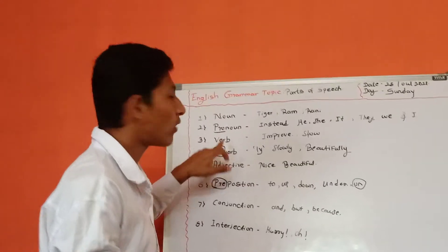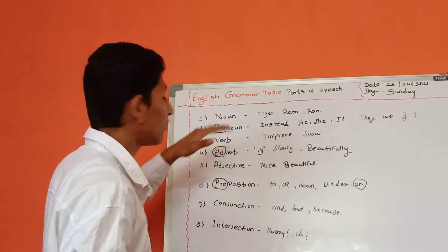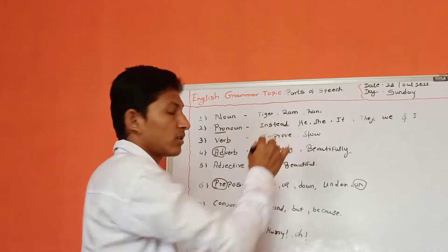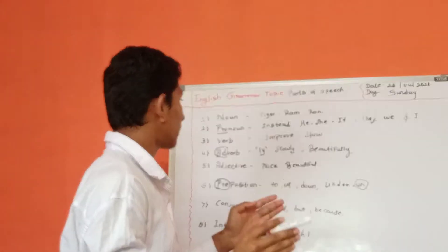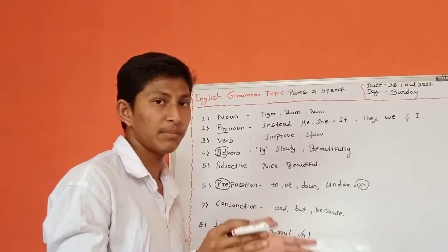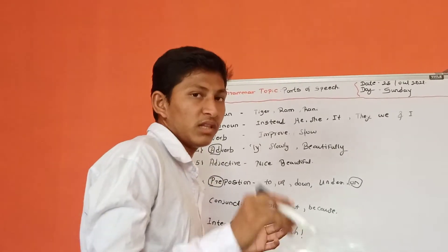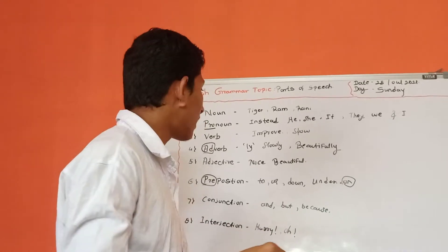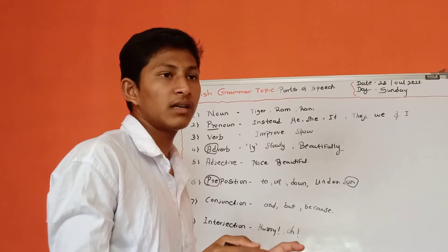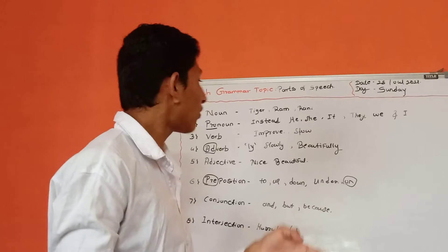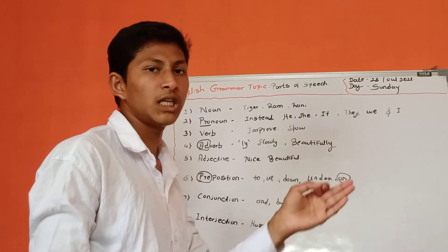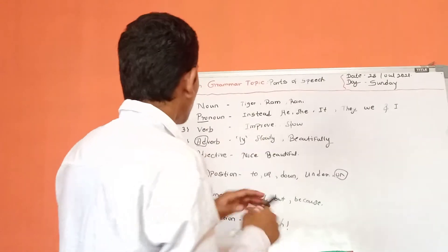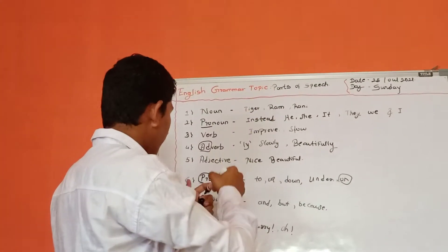Now you should only understand what is Noun, what is Pronoun, what is Verb. I will tell with definitions and examples. Noun — the definition of noun is naming words. That is a very simple definition. Another way to say it: Noun is nothing but which you can see, which you can touch, which you can feel — those are all called Nouns. I have written some examples here.